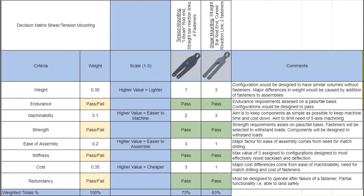Here is an example of a trade study matrix. We created several of these to assess our options on the more open-ended design decisions. We created a list of criteria for each with a weight based upon importance, which was then assessed against a score for each option to create a final viability rating. These ratings helped inform decisions in our final design.